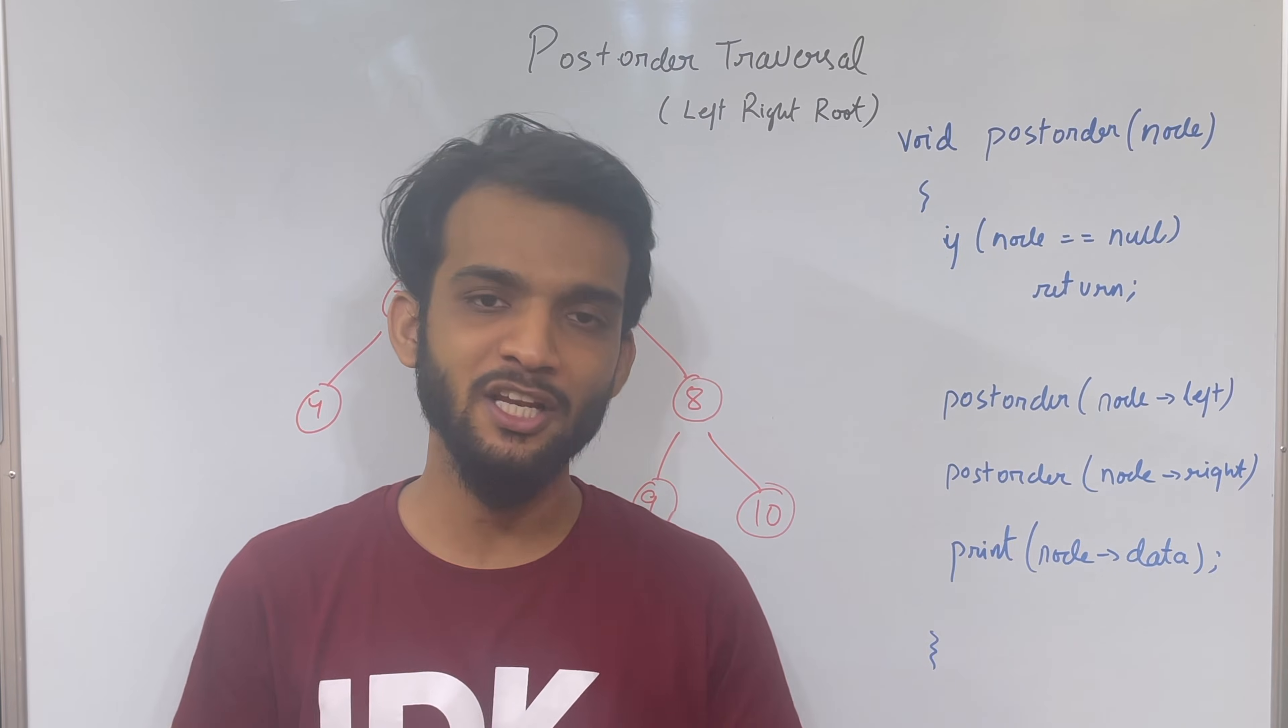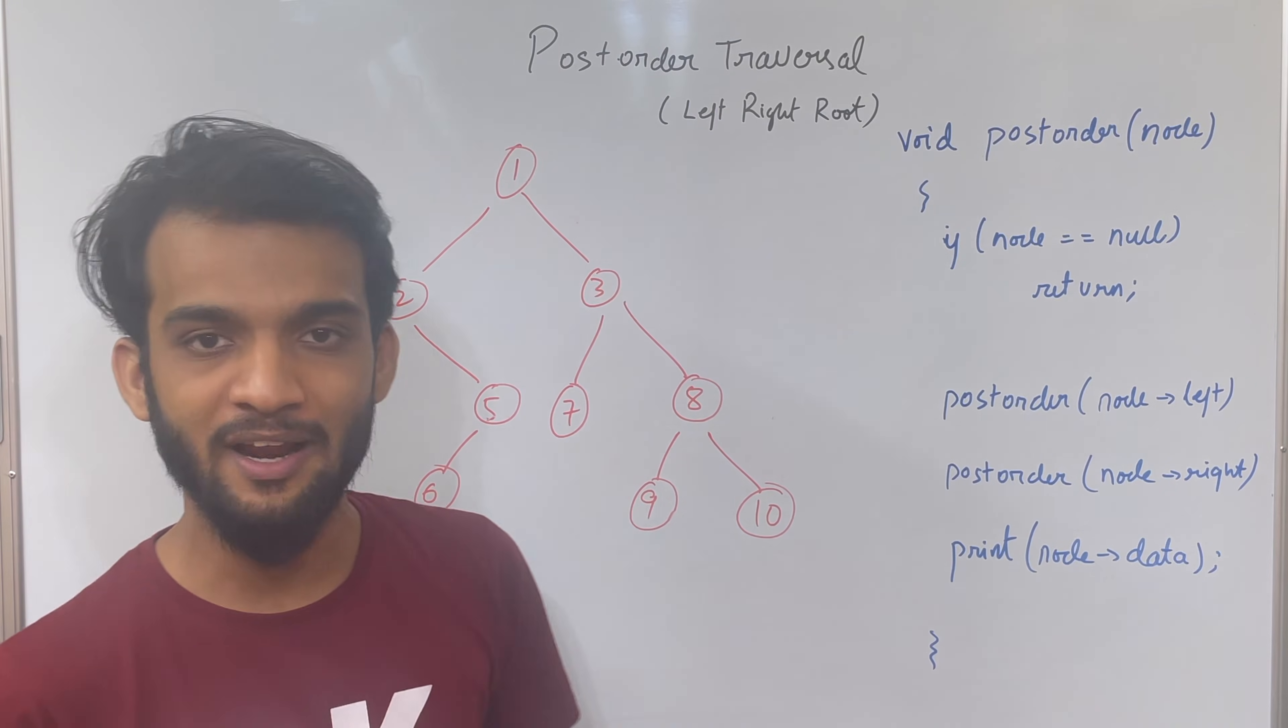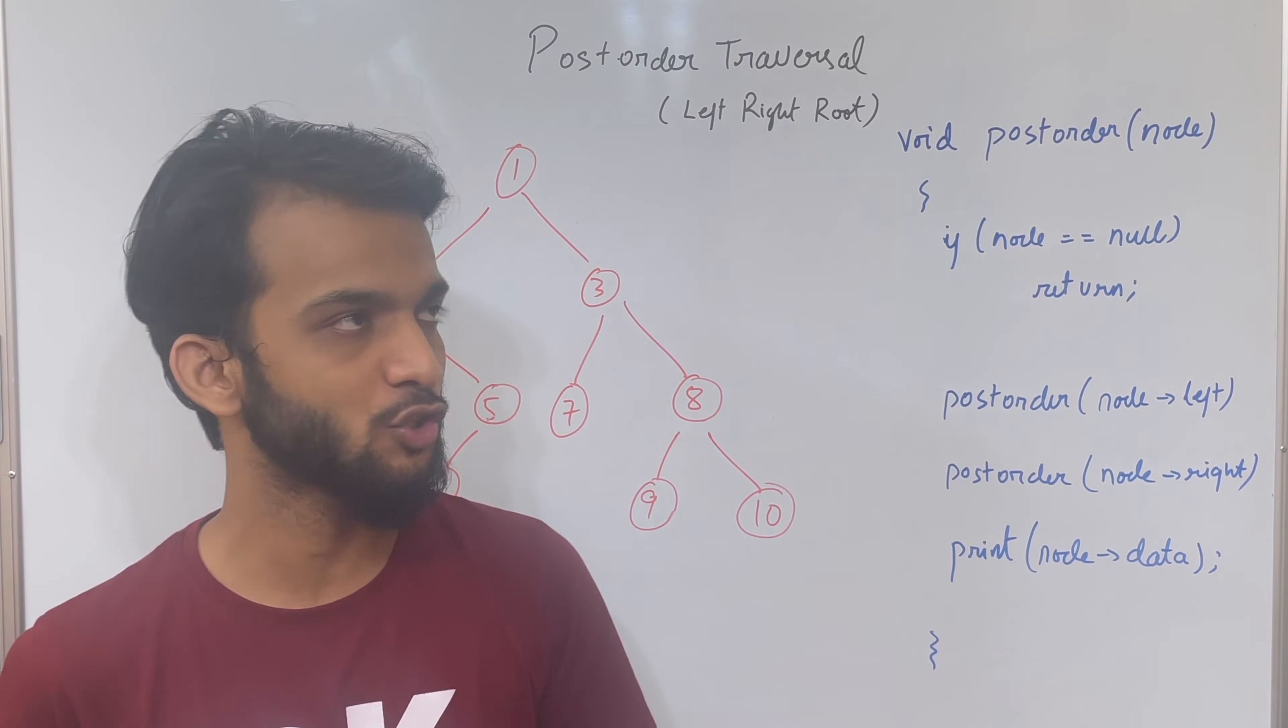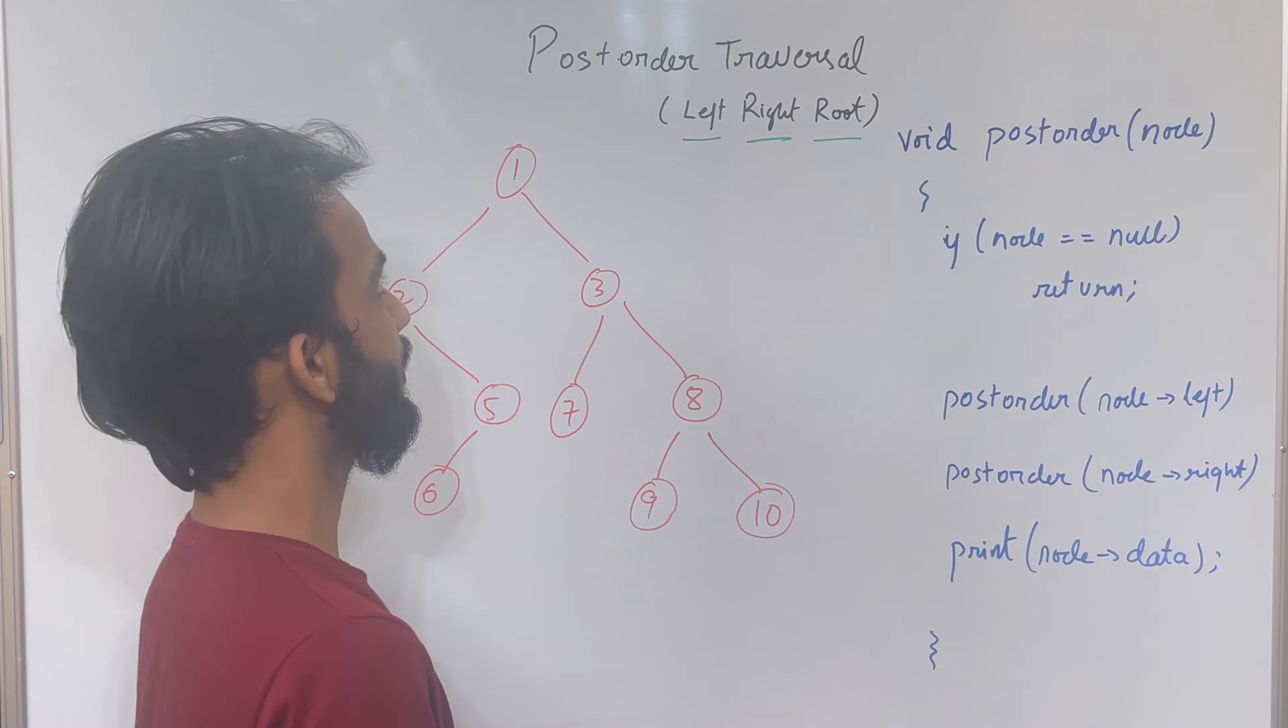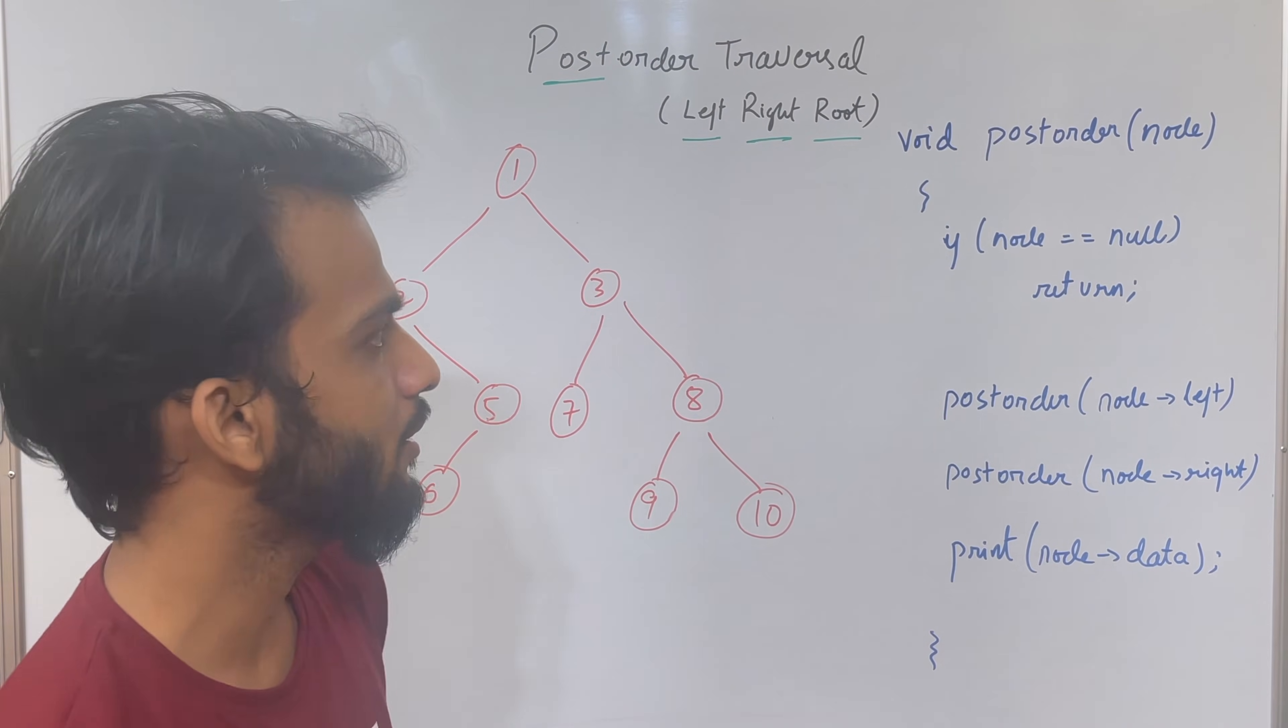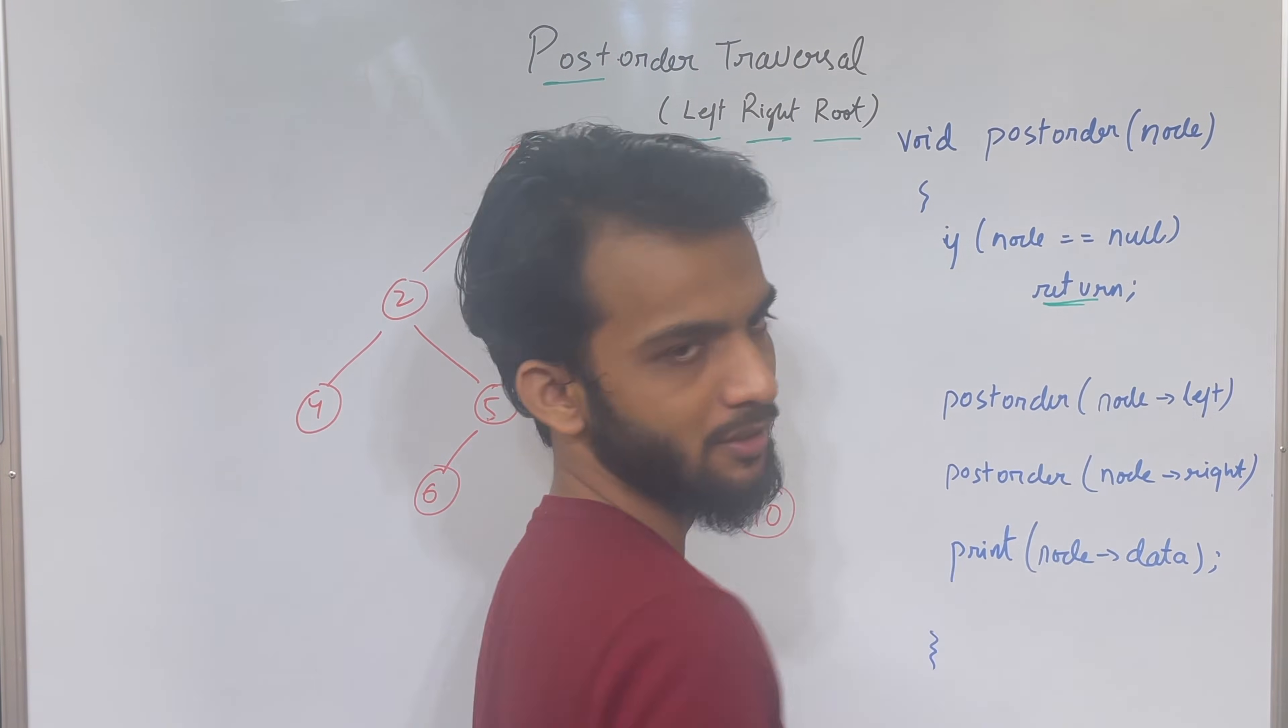Hey everyone, welcome back to another lecture of Tree Cut 3 series. In the traversal video I've already discussed about post-order traversal. In this video I'll be talking about the code implementation of this post-order traversal. What is post-order traversal? It's left-right-root. As the name suggests, post means root comes at the end. Let's keep it simple: we take a node, if it's null we return, or else left-right-root. Let's see how it works.